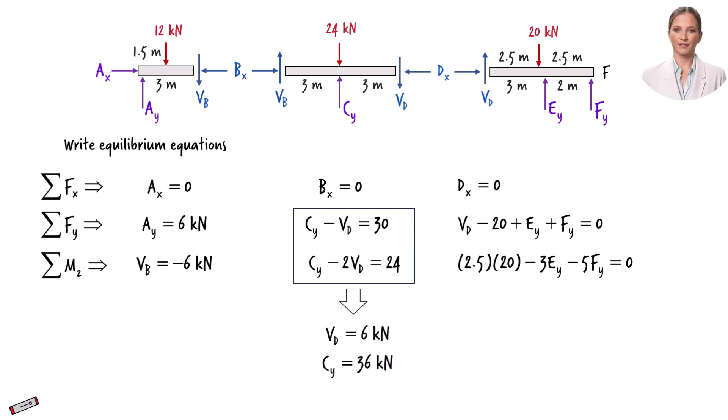Now we substitute six for Vd in this equation. These remaining two equations simplify, and solving them for the remaining two unknown forces we get the final values.